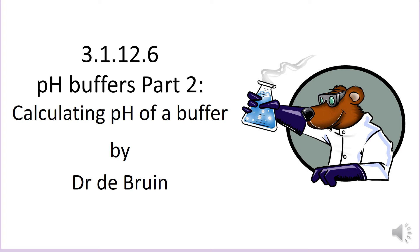This revision video is the sixth in my acids and bases series for A-level chemistry. In part one of pH buffers we looked at what buffers are, and in part two we're going to use three different methods to calculate the pH of a freshly made buffer.